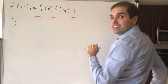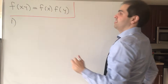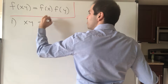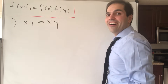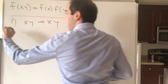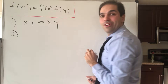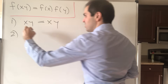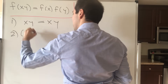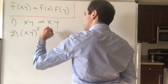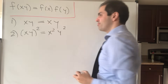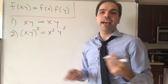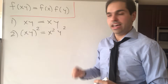The function x satisfies this because x·y equals x times y. We can go a little further — the function x squared satisfies this because (xy)² equals x² times y². And in fact, any power function like x cubed, x to the fourth also satisfies this.